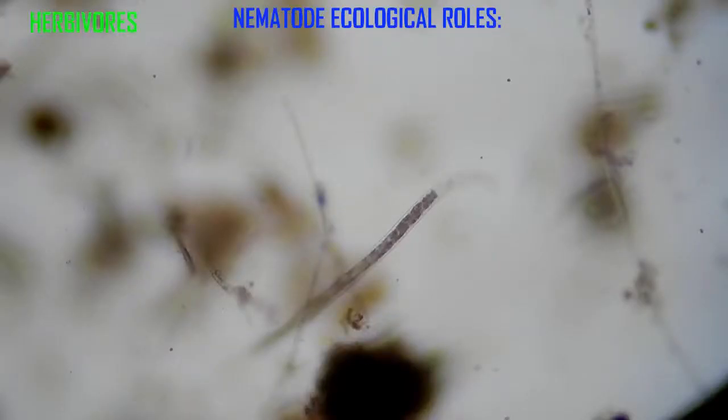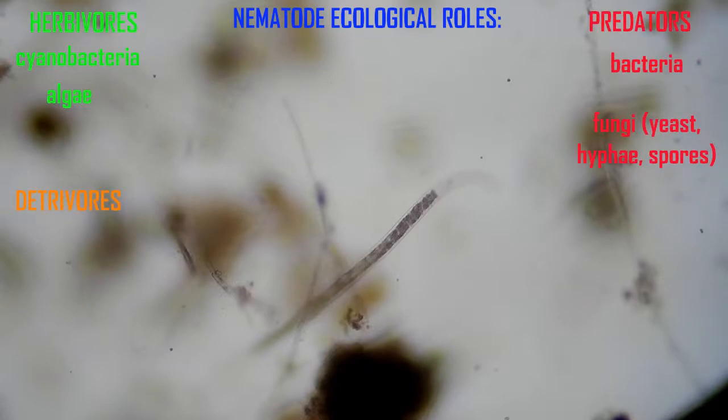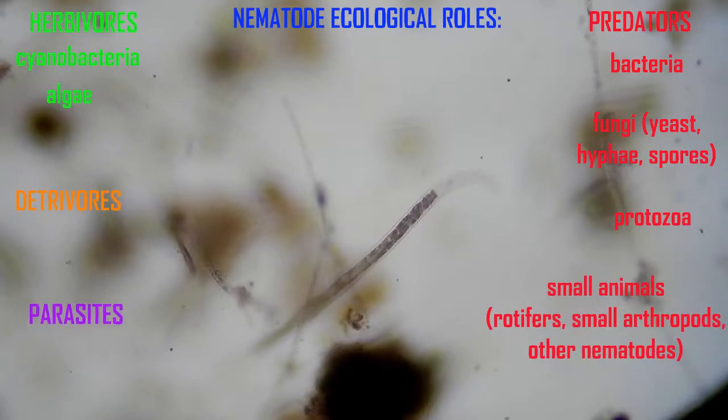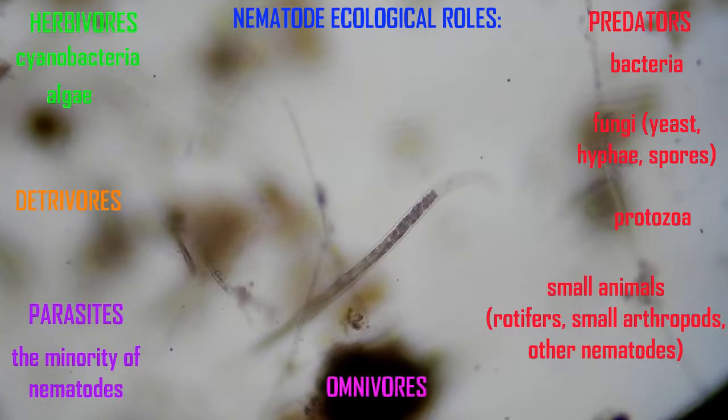In aquatic ecosystems, nematodes have diverse ecological roles. For example, they can serve as herbivores when they consume cyanobacteria, green algae, and diatoms, which have performed photosynthesis and used sunlight to store energy in biomolecules. They function as detritivores when they help to decompose dead materials.